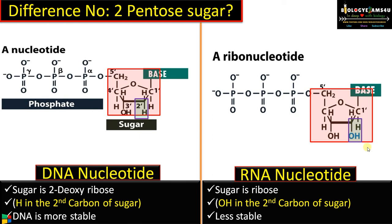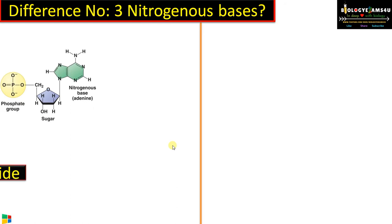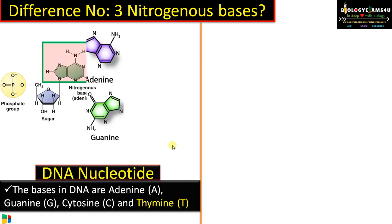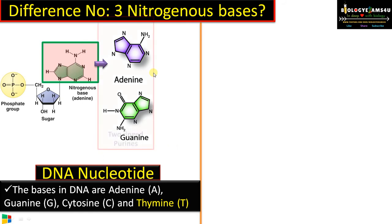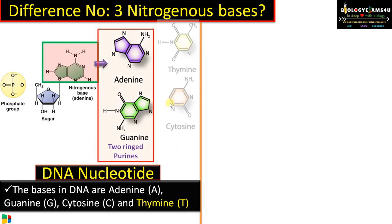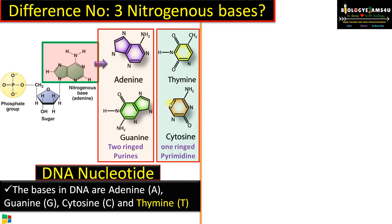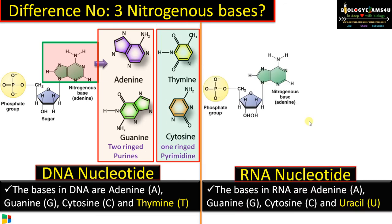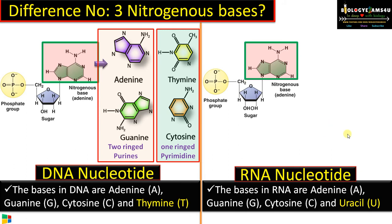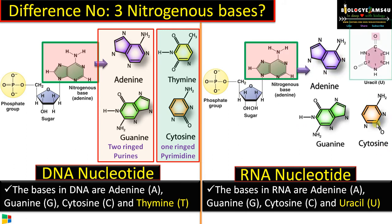The OH group is a reactive group that makes ribonucleotide more reactive and less stable compared to deoxyribonucleotide, which has hydrogen, making it more stable and less reactive. Difference number three regarding nitrogenous bases: in the case of DNA nucleotide, the nitrogenous bases are adenine and guanine — both are two-ringed, forming the purines — whereas thymine and cytosine are single-ringed, forming the pyrimidines. In RNA nucleotide, the only difference is that thymine is replaced by uracil.